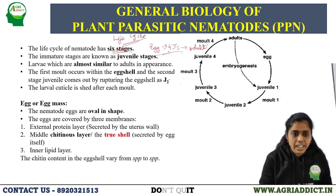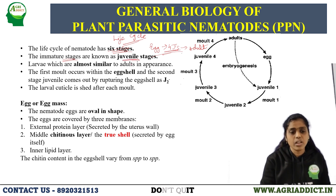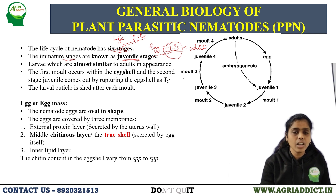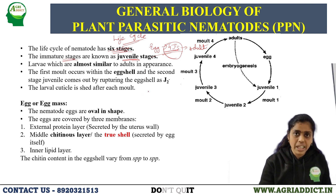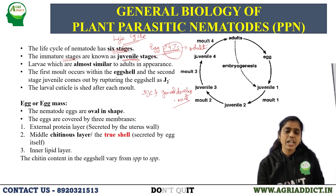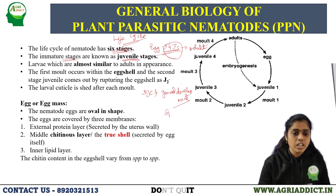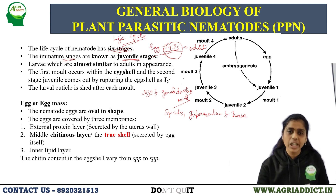I used the word 'juvenile.' What is actually a juvenile? The juvenile is nothing but the immature stage of nematode. Mainly in nematodes, there are four juvenile stages in the life cycle. The juveniles are similar to the adult in appearance, but differ in size and gonad development. Some structures like spicules, gubernaculum, and bursa are found only in adult males, not in juveniles.